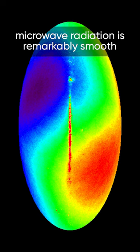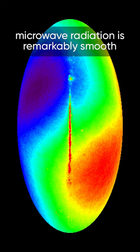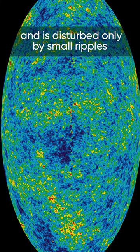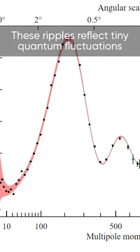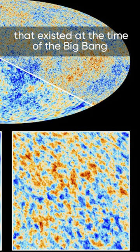The photos show that the background microwave radiation is remarkably smooth and is disturbed only by small ripples. These ripples reflect tiny quantum fluctuations that existed at the time of the Big Bang.